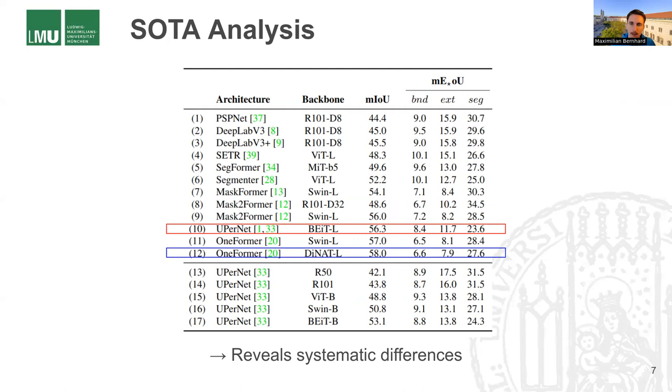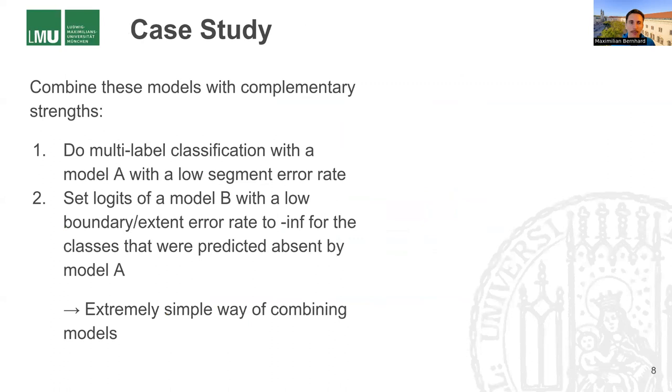And the question is now, if these error signatures are kind of complementary, can we exploit that? And to investigate that, we made a case study and combined models with complementary strengths according to our error metrics.